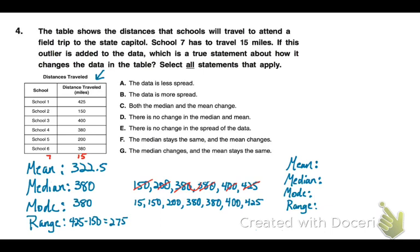Now let's add that outlier. So you can see I've written our new data set with the 15. I'm going to add those up now to find my mean and divide by, in this case, seven. So my average is 278.6. That's the mean. The median is still 380. My mode is still 380. My range, however, has changed. My range has increased.